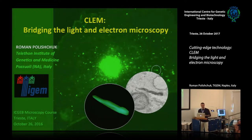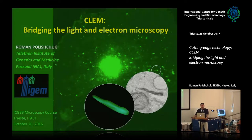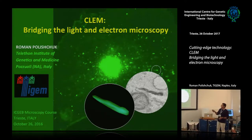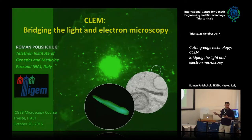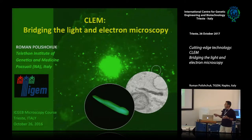I'll start by thanking the organizers for giving me a chance to share with you how we developed correlative light electron microscopy and how we use it in our past and recent studies. I will talk today about the technology called correlative light electron microscopy, which allows the user to look at a structure of interest in a live cell, then freeze the cell by fixation, and find the same structure on the electron microscope to understand its 3D architecture.